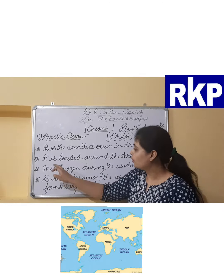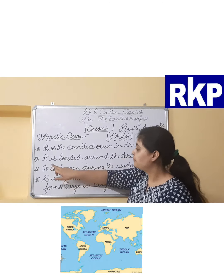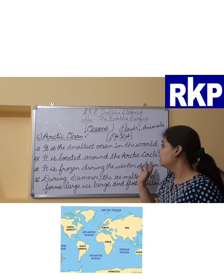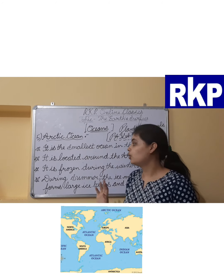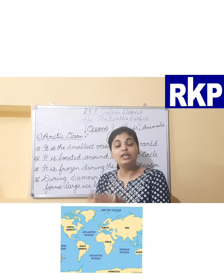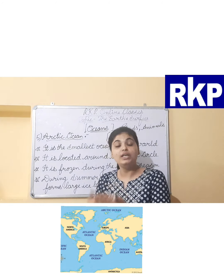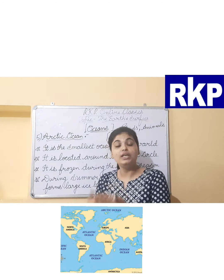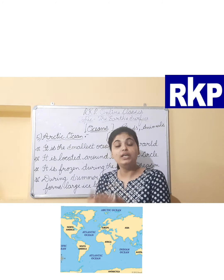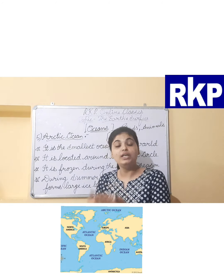Our last ocean is A, which stands for Arctic Ocean. It is the smallest ocean in the world. We have been discussing all the oceans in descending order from largest to smallest, and now we reach A — the Arctic Ocean, which is the smallest ocean in the world. It is located around the Arctic Circle.